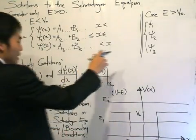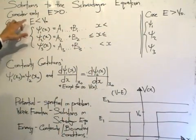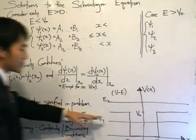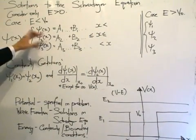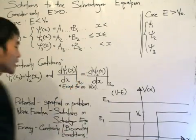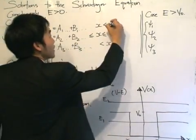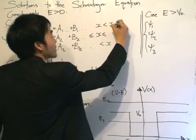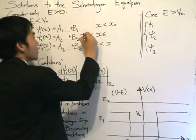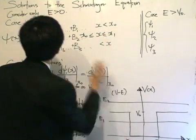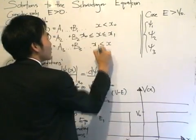Let's test our knowledge. We want to fill out the domains for x when dealing with energy less than the potential, and fill in the domains of x for these separate solutions when the potential changes. Psi1 is the solution from minus infinity to x0. Psi2 is from x0 to x1. And psi3 is from x1 to infinity.